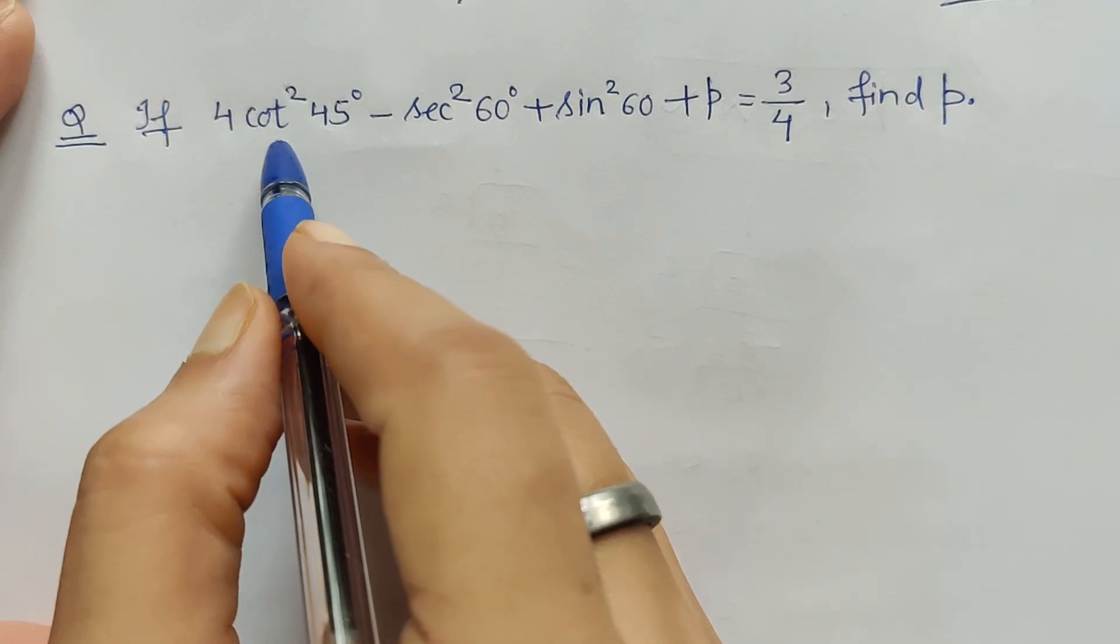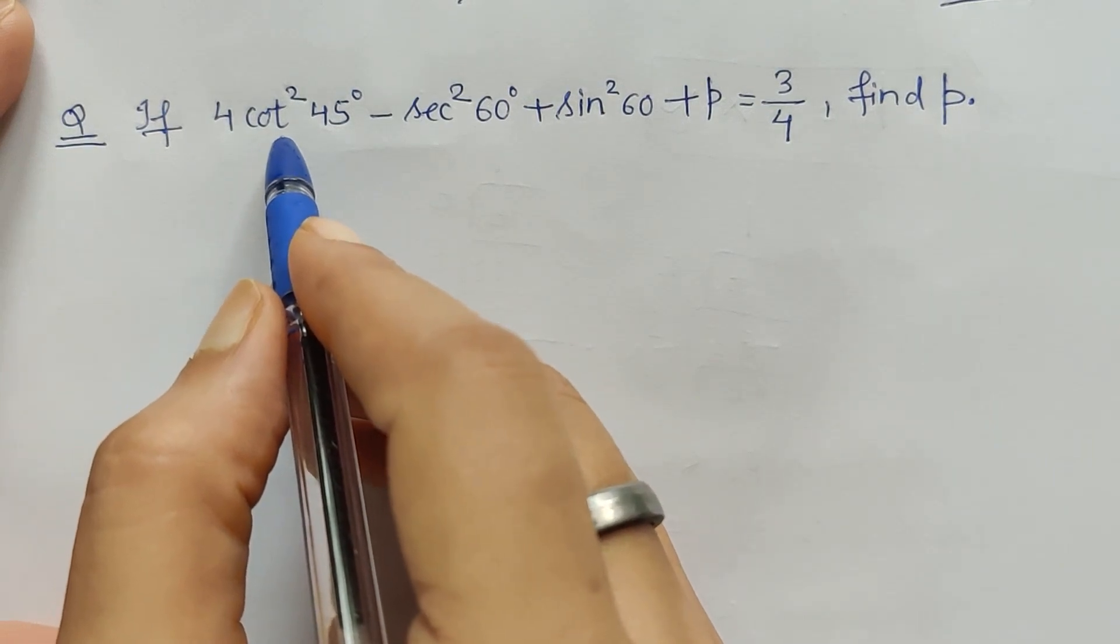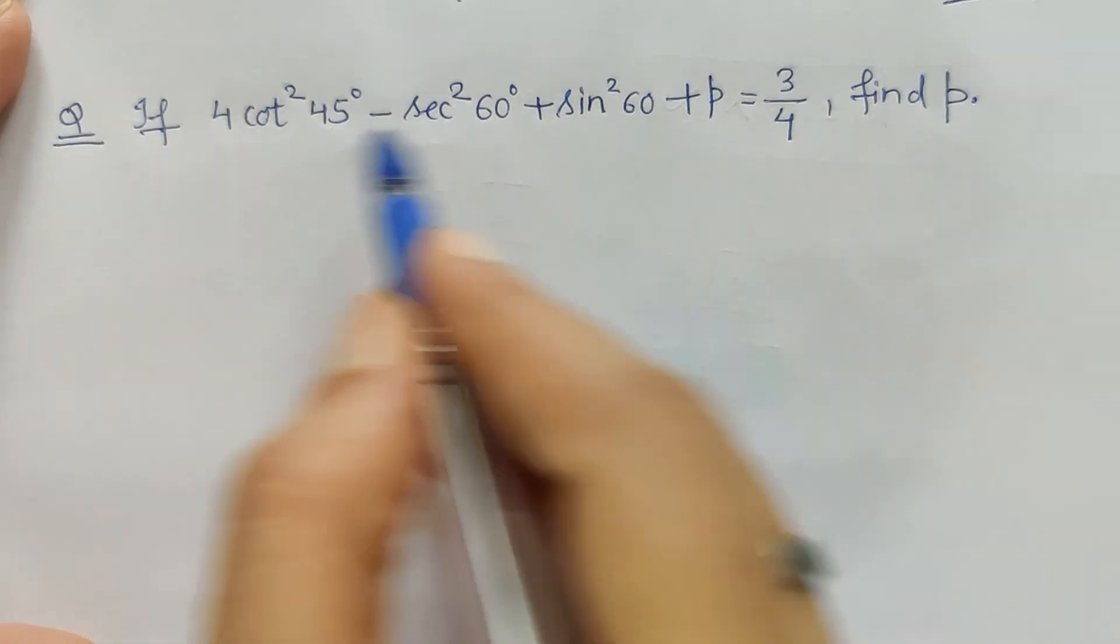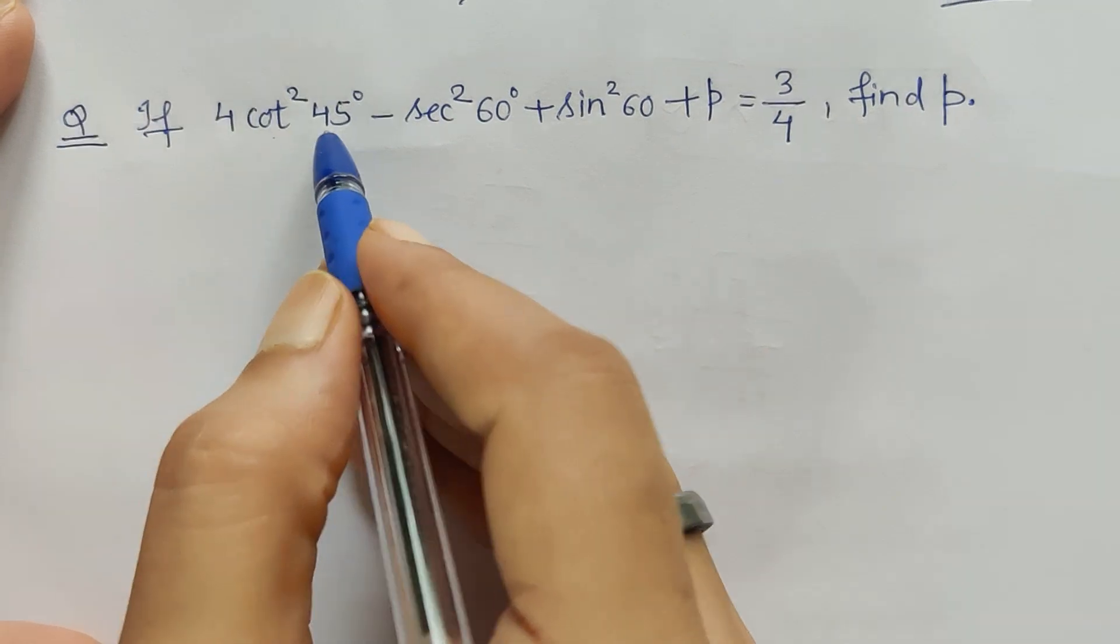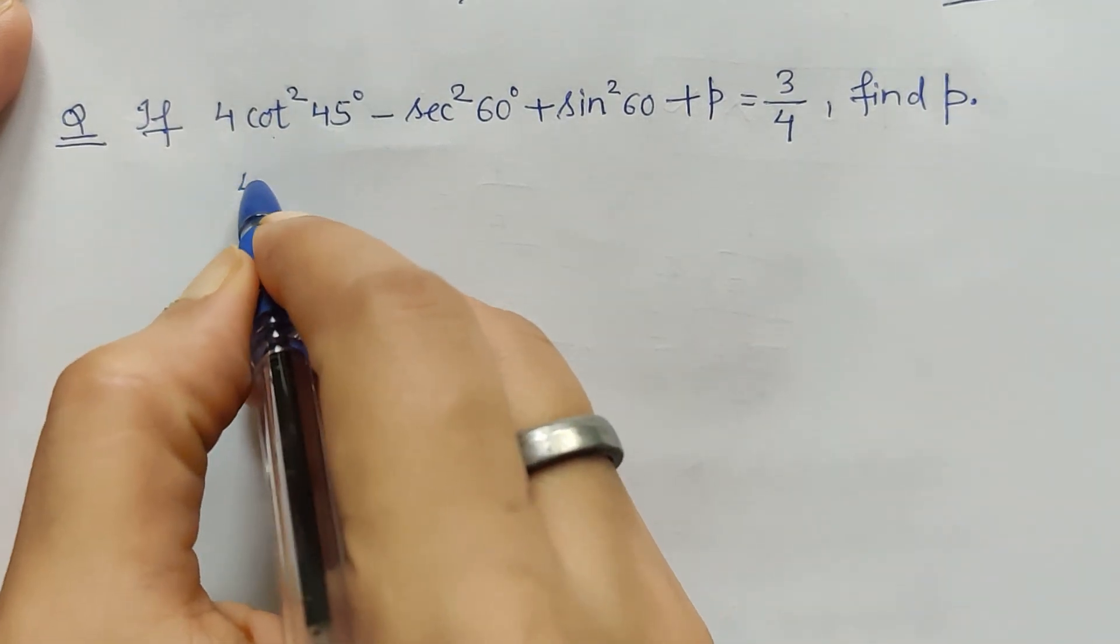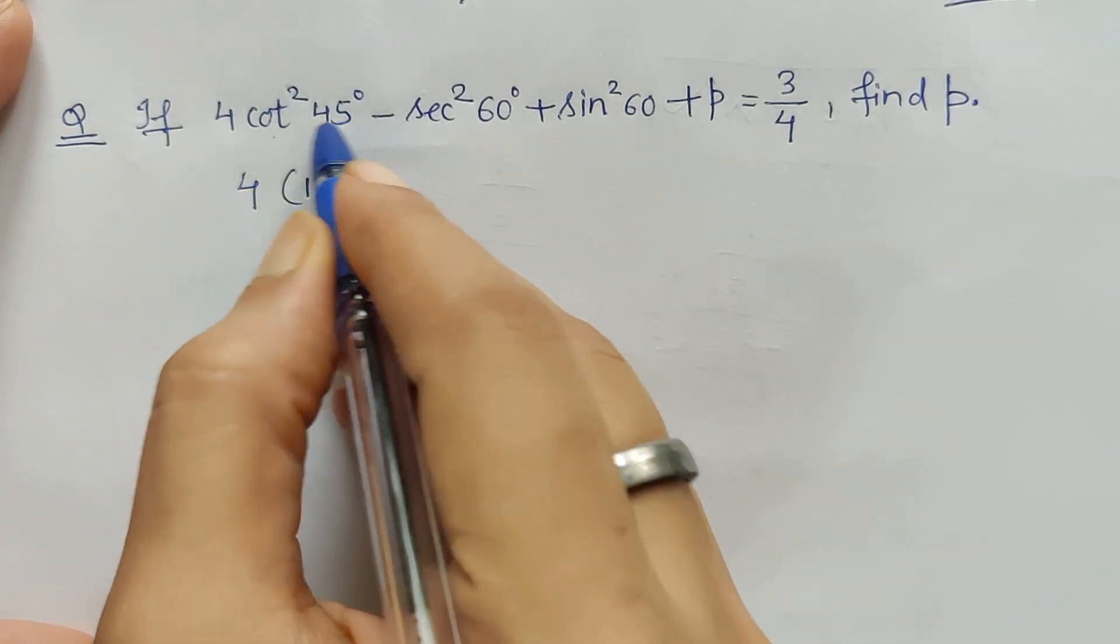We just have to write the values of trigonometric functions at these standard angles. So cot is reciprocal of tan. Tan 45° is 1, so cot 45° is also 1. So it is 4 times 1 squared, because cot²45° equals 1².